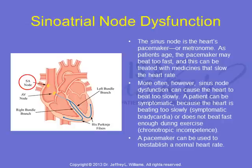A patient can be symptomatic because the heart is beating too slowly — this is called symptomatic bradycardia — or does not beat fast enough during exercise, called chronotropic incompetence. A pacemaker can be used to reestablish a normal heart rate.